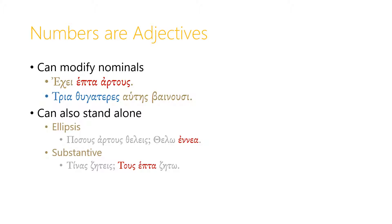Now, really, what I would be saying there, if I made the thought complete, is I want nine artus, nine loaves of bread. But as in English, we can leave the noun out if it's obvious which noun we're talking about. And so we just say thelo ennea. I want nine. That's called ellipsis because it's leaving out a noun that is there, at least in thought.